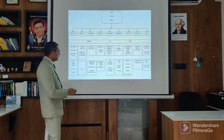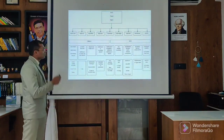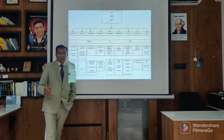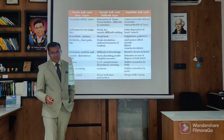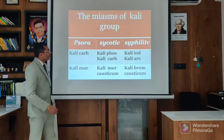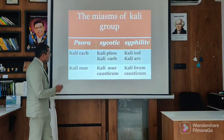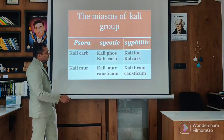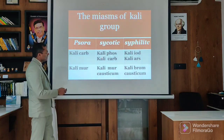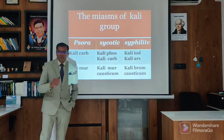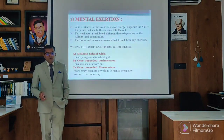In nutshell, these are the few points - you can go through the repertory book where it was given in the wonderful aspect. The miasm of the Kali group is something that: Kali Carb can be psoric, sycotic or psoro-sycotic. Kali Iod is syphilitic. Kali Ars is syphilitic. Kali Brom and Causticum are more syphilitic. Kali Mur is sycotic. Kali Phos is psycho-syphilitic and so on. These are the few understandings of the miasmatic classification of the patients.